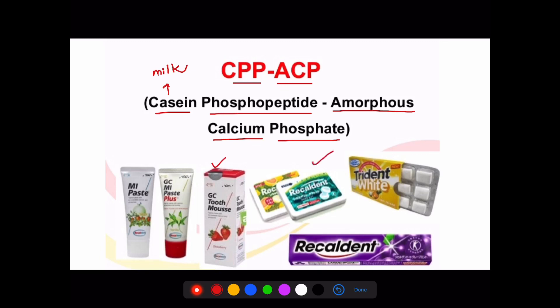You can see it in chewing gum forms like Trident or Recaldent, because Recaldent is the most commonly used word in examination halls. It's present in MI paste. It's used in combination with composites and many other new advanced restorative materials. These materials are called smart materials.